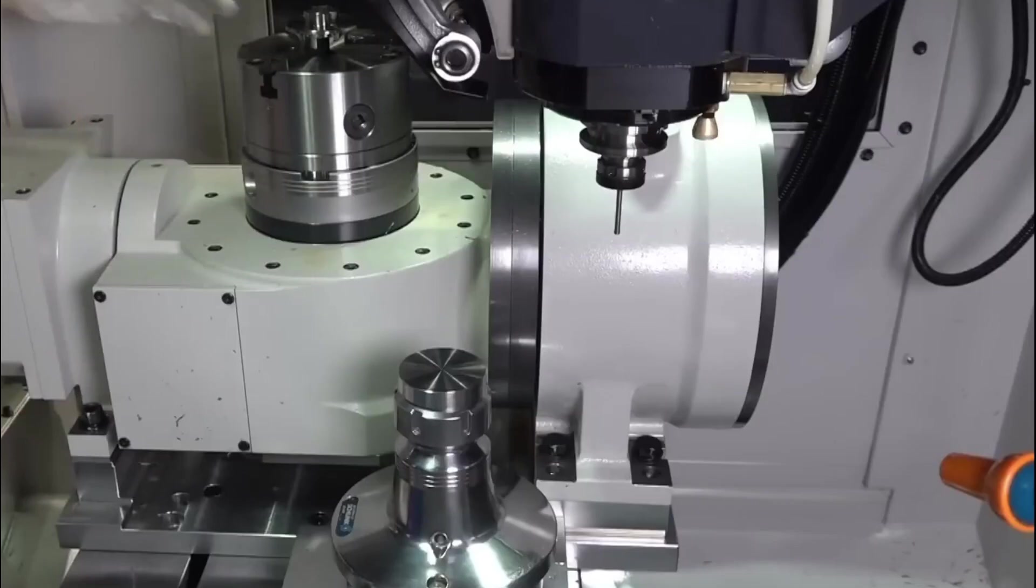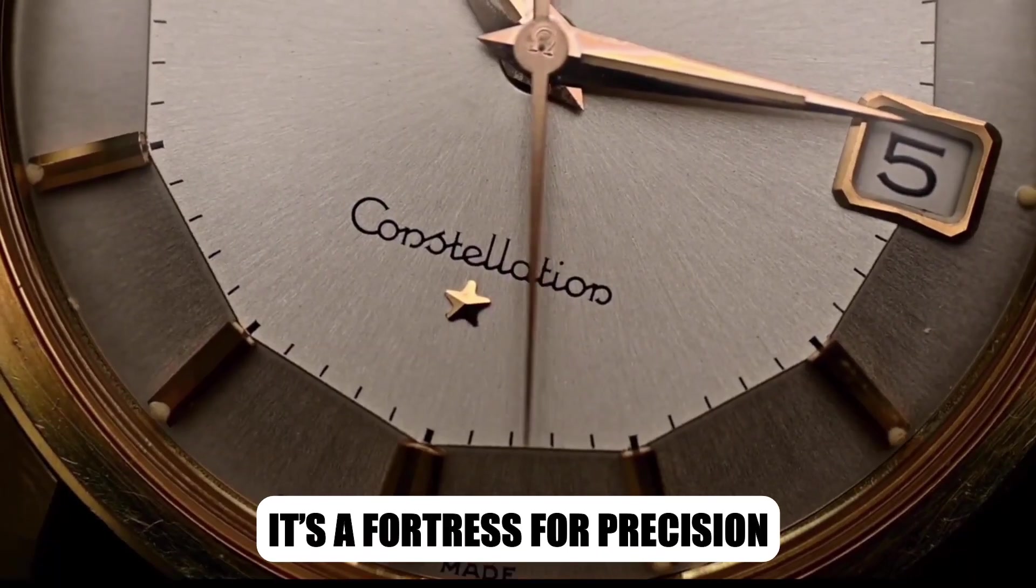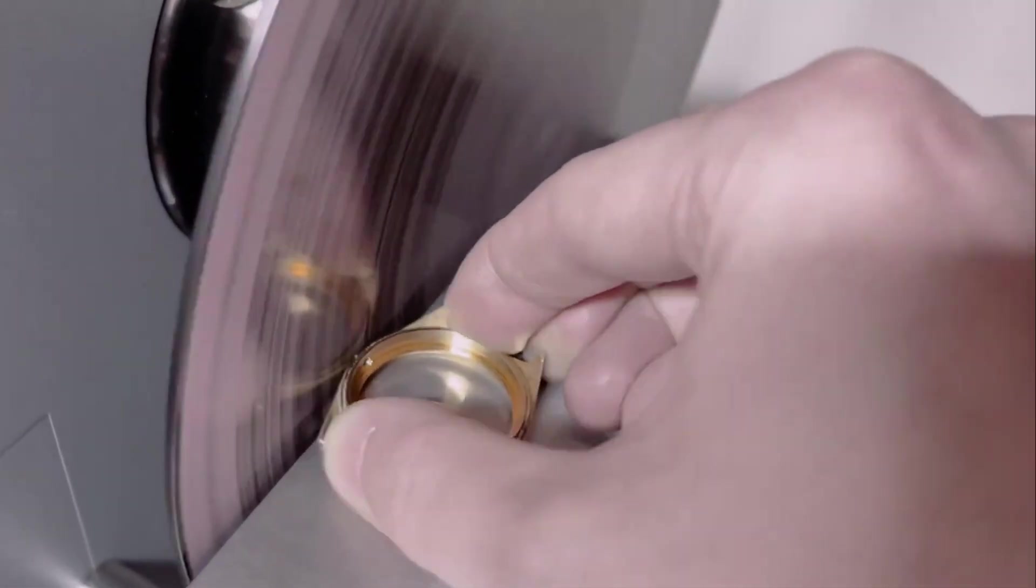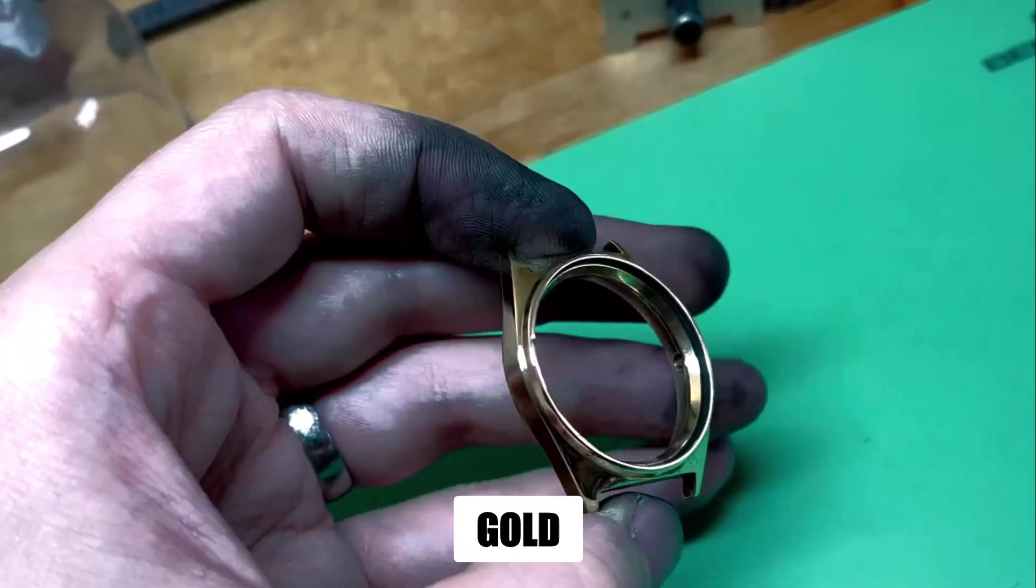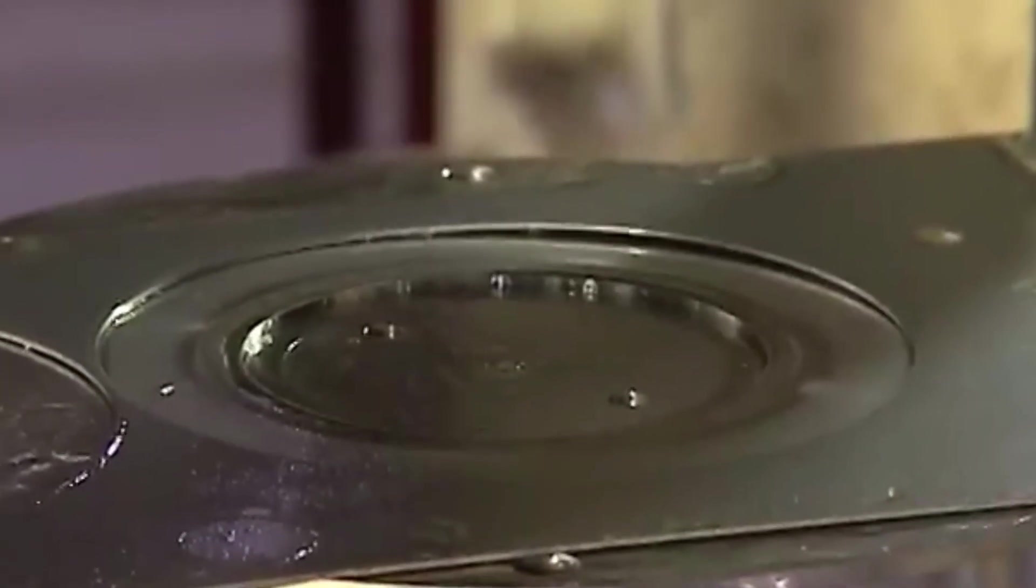Now the transformation begins, where blocks of metal find form. The watch case is way more than a shell, it's a fortress for precision. At Omega, that fortress begins as a simple block of steel, gold, or ceramic. From there, extreme forces are unleashed. High-pressure stamping slams thousands of tons onto the metal, compressing it into a rough outline of the case. Each strike pushes the material closer to its final destiny.